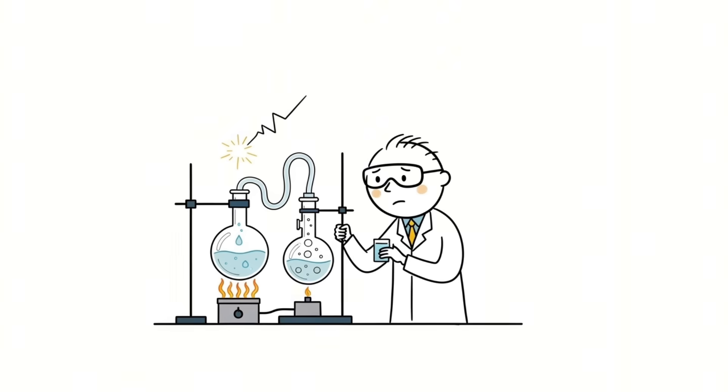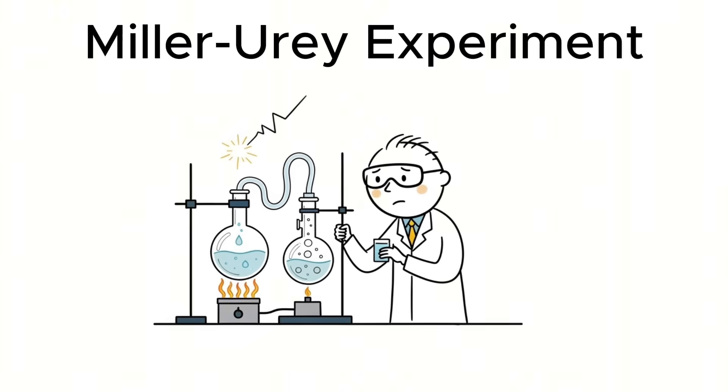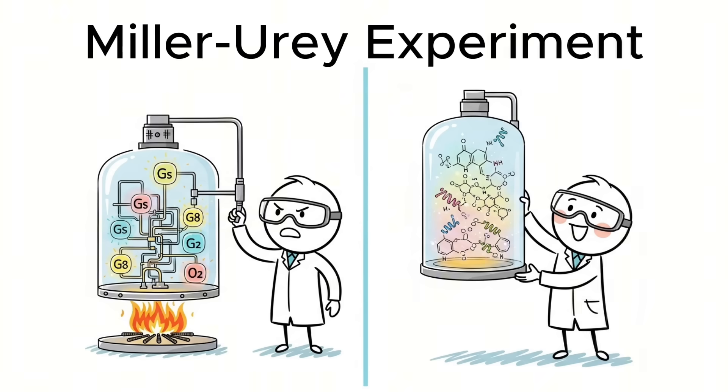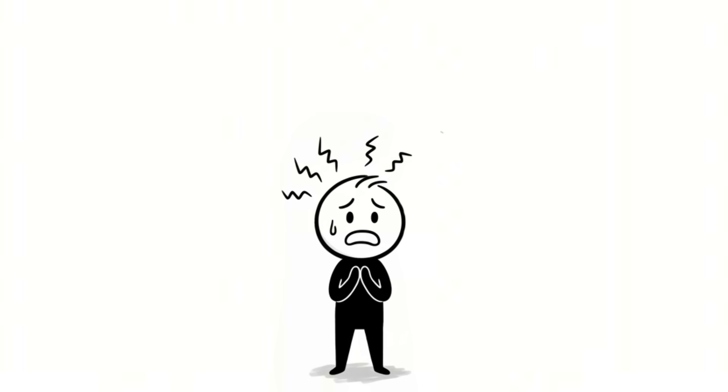In 1952, scientists tested this in the now famous Miller-Urey experiment. They simulated early Earth, zapped a mixture of gases with electricity, and created amino acids, the basic building blocks of proteins that are present in all living organisms.